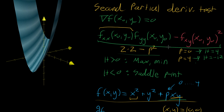For now, the key takeaway is what this test is: you take all three second partial derivatives, multiply together the two pure second partial derivatives — f_xx and f_yy — then subtract the mixed partial derivative squared. In the next video, I'll give more intuition for where this formula comes from and why analyzing whether h is greater than or less than zero is a reasonable way to determine whether a point is a local minimum, maximum, or saddle point.